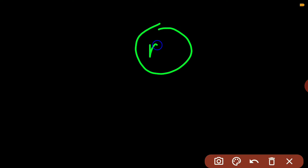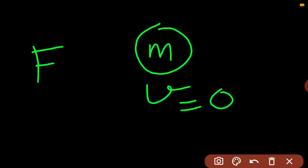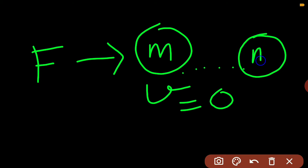This is to explain the statement of Newton's second law of motion. Suppose there is one object lying in front of you whose mass is m, whose velocity is 0 because it is not moving. And suppose you apply force in this direction — obviously, this object will try to move here and will have some velocity; let that velocity be V or any value.